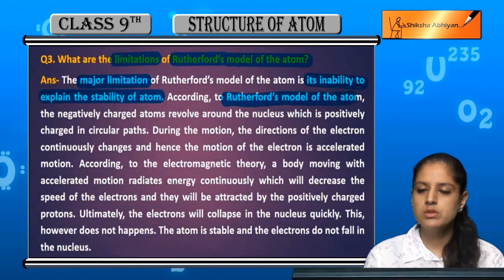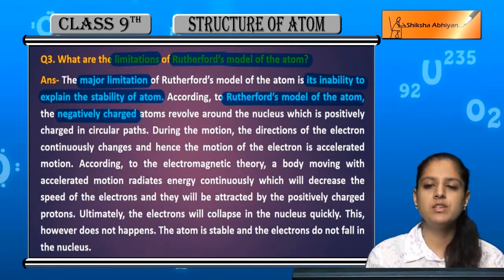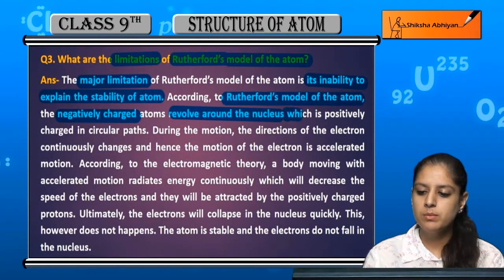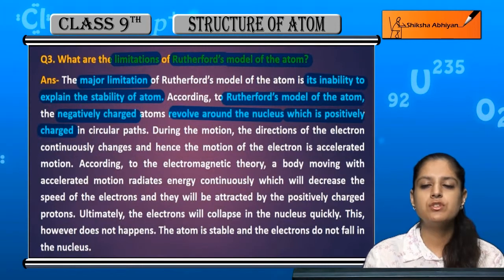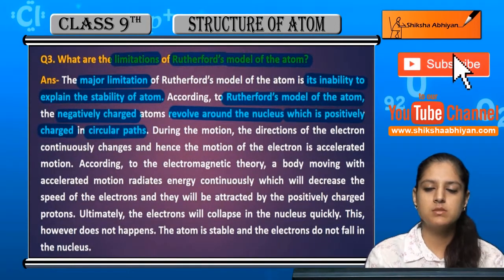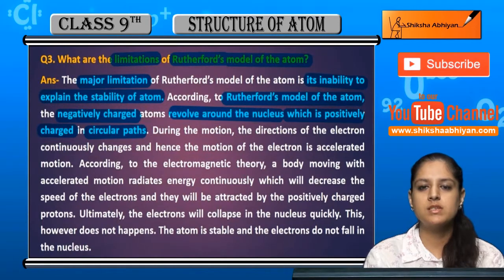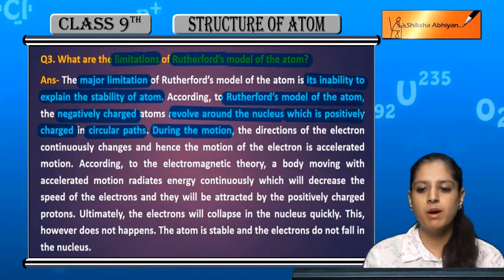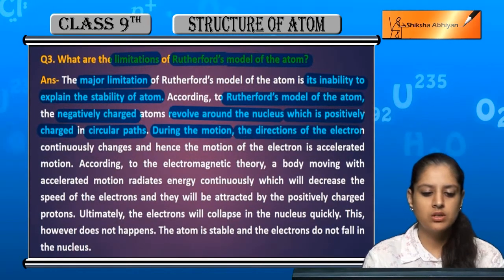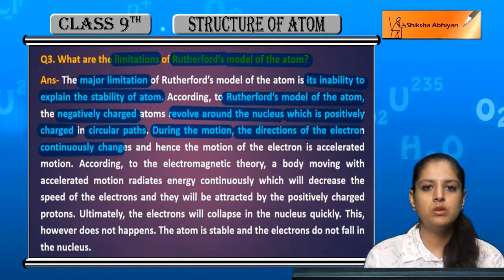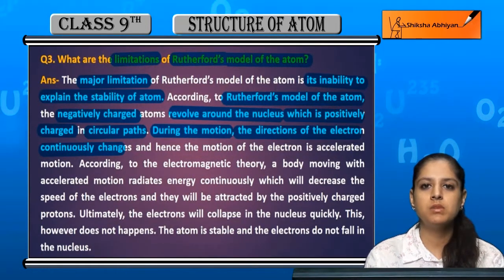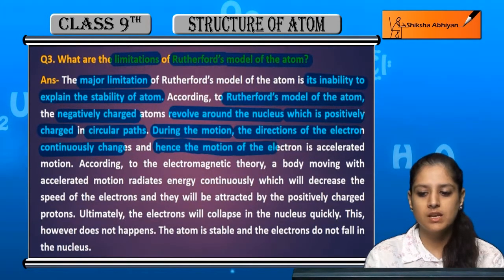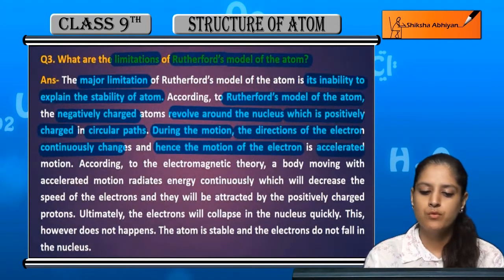According to this model, the negatively charged particles revolve around the positively charged nucleus in circular paths. Now, whenever there is circular motion, the direction of the electron changes. And if the direction changes, we say that the motion of the electron is accelerated motion.